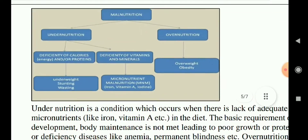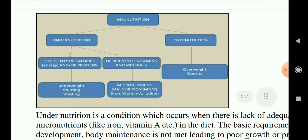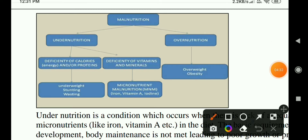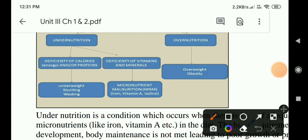Looking at the flowchart, malnutrition is of two types: undernutrition and overnutrition. Undernutrition is a deficiency of calories, energy and/or proteins, and also a deficiency of vitamins and minerals. Deficiency of calories and energy causes underweight, stunting and wasting, while deficiency of vitamins and minerals causes micronutrient deficiencies such as iron deficiency and vitamin A deficiency.